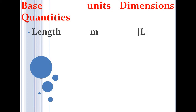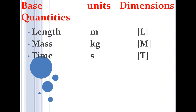The SI unit of length is metre, the CGS unit is centimetre, and the dimension of length is L. The second fundamental quantity is mass — its SI unit is kilogram and its dimension is M. The third base quantity is time — its SI unit is second and its dimension is T.